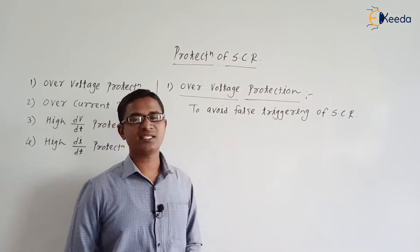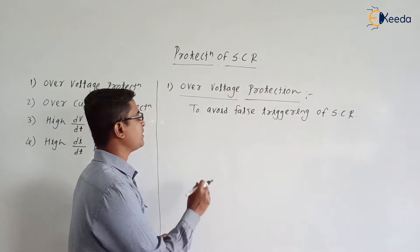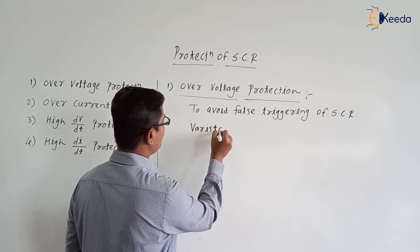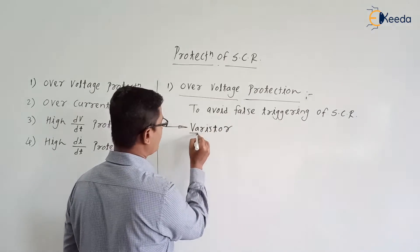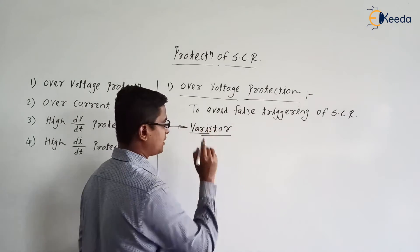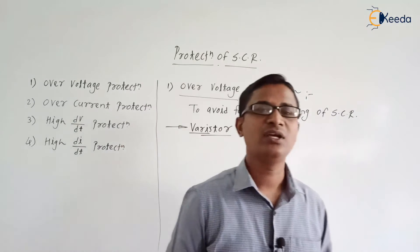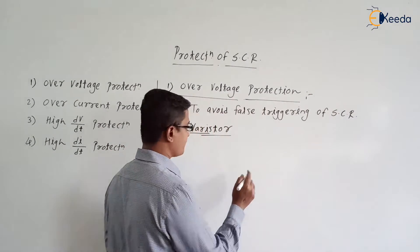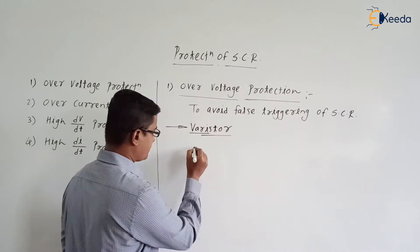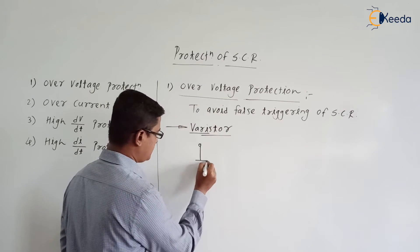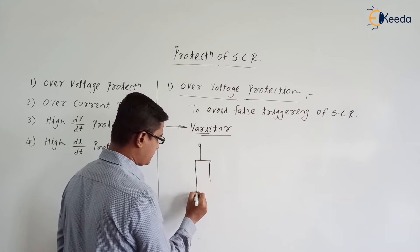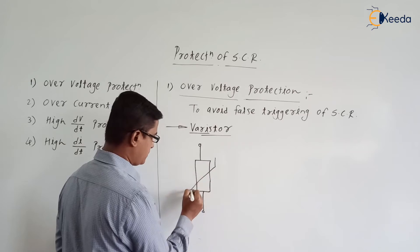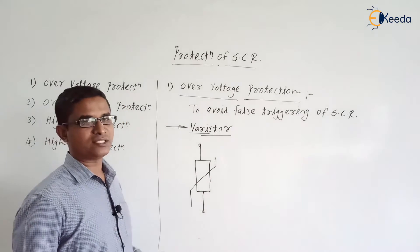In order to protect the SCR against over voltage, we are using a varistor. Varistor stands for variable resistor. The varistor is represented with a symbol as shown in the figure.